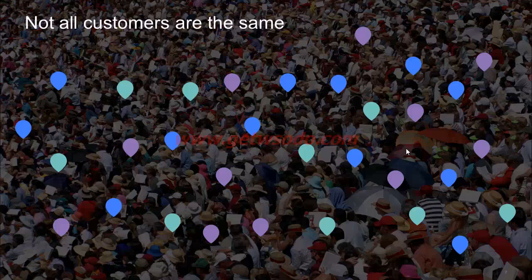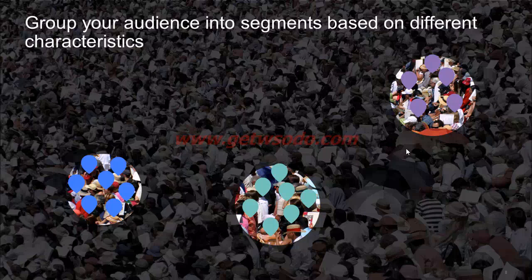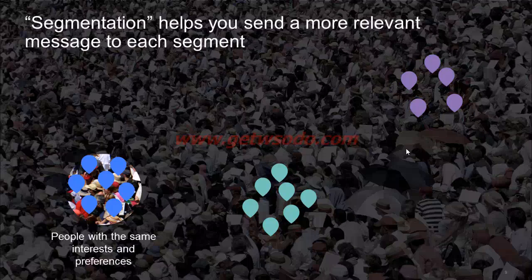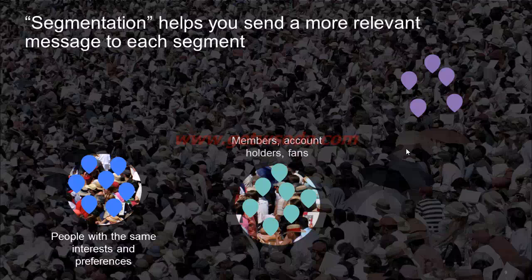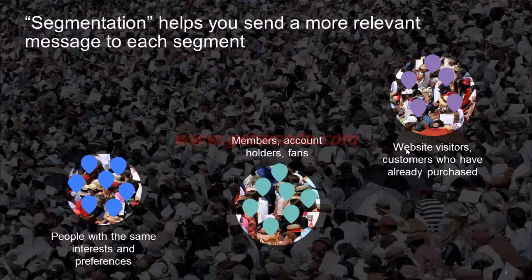Amongst your entire set of customers and prospects, you identify people who exhibit certain similar interests and characteristics, and you group these people together into what we call audience segments. You could have one segment for your existing customers, for your page fans, another for people who visited your website, or people who completed a purchase. For each of these segments you would send out a specific message that is most relevant to them, making your ads more effective since you're reaching out to the right audience with the right message in the right context at the right time.